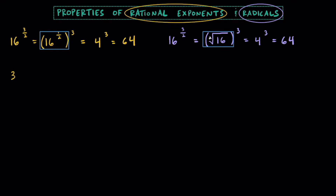Let's try another one. Let's take 32 and raise that to the negative 3 fifths power. In case you forgot, if you're dealing with negative exponents, we can easily make them positive exponents by just reciprocating and putting it down in the denominator. Then, just like the example above, I'm going to go ahead and separate this exponent into two different values. I'm going to raise 32 to the 1 fifth power, and then raise that to the 3rd power.